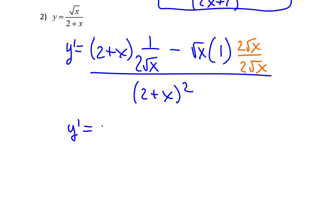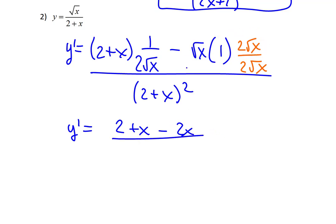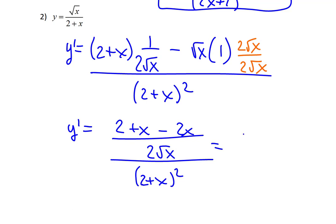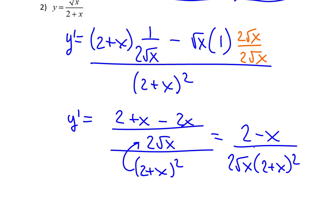Rewriting, y prime equals: in the large numerator we now have 2 plus x minus 2x — since root x times root x gives x, multiplied by 2 — all over the common denominator 2 root x, which is still over 2 plus x squared. Combining like terms in the numerator gives 2 minus x. Simplifying the complex fraction by multiplying denominators gives 2 minus x over 2 root x times 2 plus x squared. Since it's no longer a complex fraction and has all positive exponents, we leave it there.